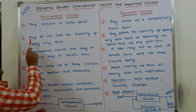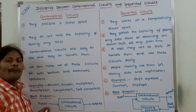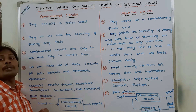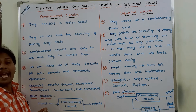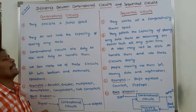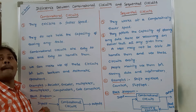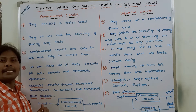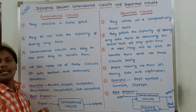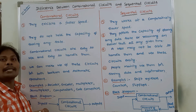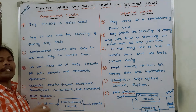Eighth point: combinational circuits do not hold the capacity of storing any state. Combinational circuits do not store any state. Whereas in the case of sequential circuits, they have the capability of storing any state or retaining an earlier state. Both the previous state and the present state can be stored in the memory elements of sequential circuits. Therefore, sequential circuits can store any state or store an earlier state at any given time.